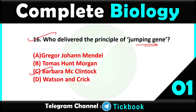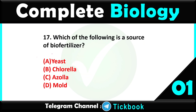Question sixteen: who delivered the principle of jumping gene — option number C, Barbara McClintock, is the right answer. Question number seventeen: which of the following is a source of bio fertilizer — option number C is the right answer: Azolla.